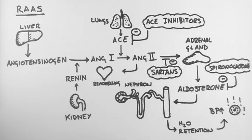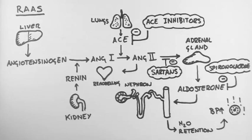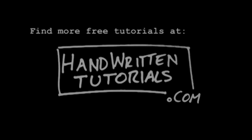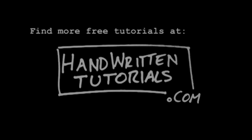It's also important to note that by blocking the action of angiotensin 2, ACE inhibitors and sartans can prevent the remodeling of the heart after a heart attack. These drugs lead to a lower blood pressure and a better outcome after a heart attack. That's an overview of the renin angiotensin aldosterone system. For more free tutorials and the PDF of this tutorial, visit www.handwrittentutorials.com.